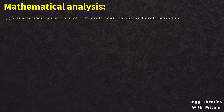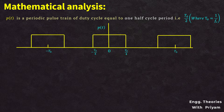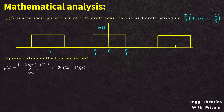p(t) is a periodic pulse train with duty cycle equal to half the cycle period, T0/2, where T0 = 1/fc. We can represent this periodic pulse train in Fourier series as: p(t) = 1/2 + (2/π)·Σ (from n=1 to ∞) [(-1)^(n-1) / (2n-1)]·cos(2π·(2n-1)·fc·t). This is identified as equation number 3.